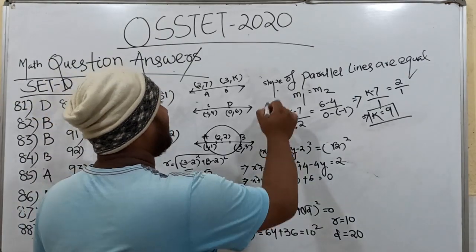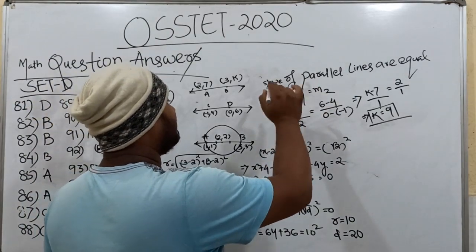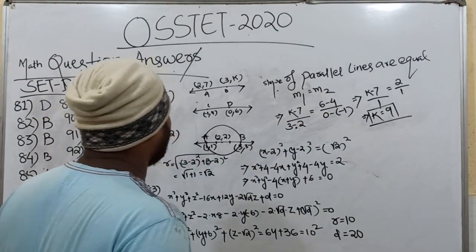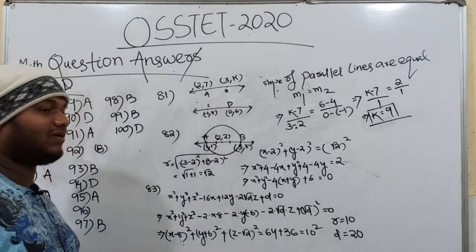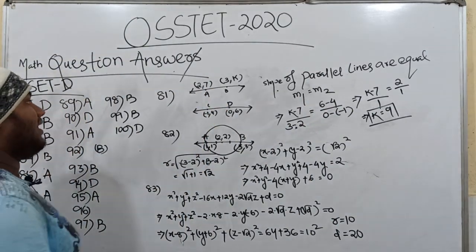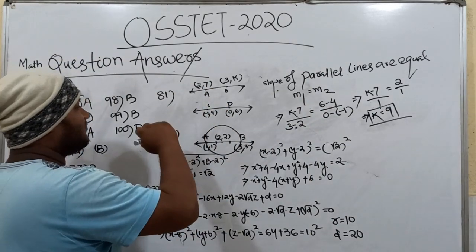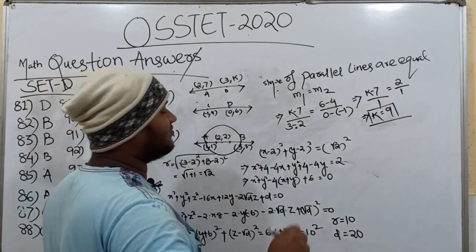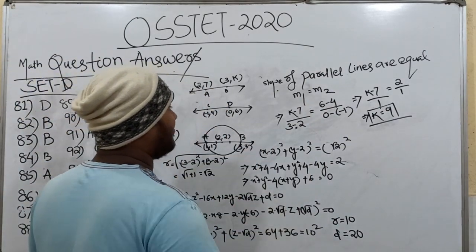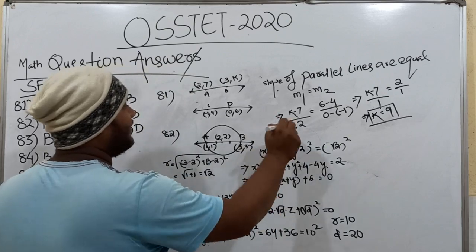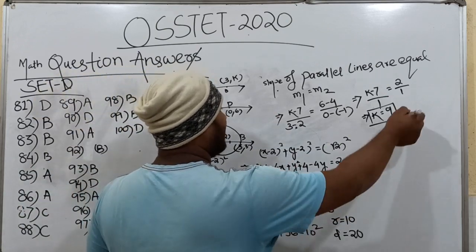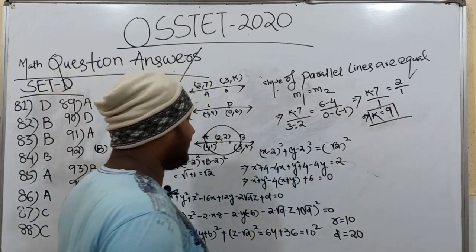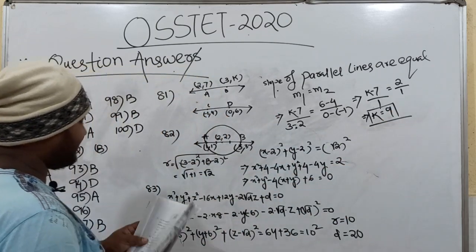M1 is equal to M2. The slope can be found using the formula Y2 minus Y1 by X2 minus X1. Put the same formula in, then solve the problem. J equals 9.